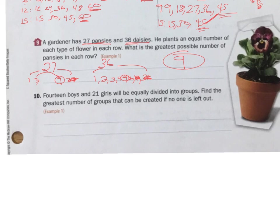Number 10. 14 boys and 21 girls will be equally divided into groups. Find the greatest number of groups that can be created if no one is left out. Again, we're looking for this greatest common factor. So, 14 and 21. I'm just going to do 14. 1, 14, 2, 7. Does 14 go into 21? Nope. Does 7 go into 21? It sure does. So, 7 groups. I could have 7 groups. It would have 2 boys in each group, and it would have 3 girls in each group. But it would be 7 groups. Greatest number of groups. Nobody left out. Greatest common factor.